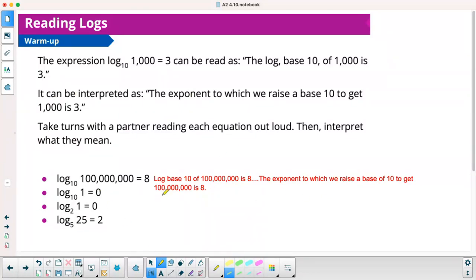I got the first one written here. I would read as log base 10 of 100 million is 8. And then I would say the exponent to which we raise a base of 10 to get 100 million is 8. I'm also, maybe on the left side here, I'm going to write it in exponential form. So this is going to be 10 to the 8th equals 100 million.